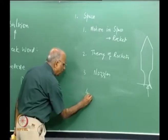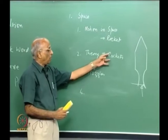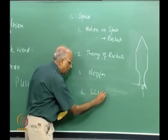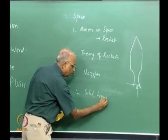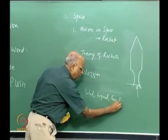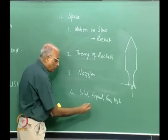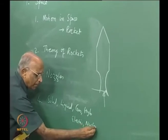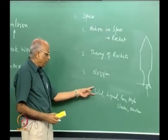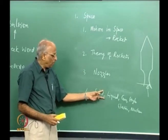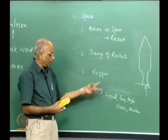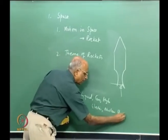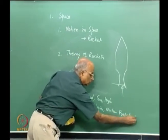The fourth chapter gets back into propellants — what is used for propelling — which could be solid, liquid, gaseous, hybrid, electric, or nuclear. We will study the characteristics required to make a good rocket propellant: solid, liquid, gas, hybrid, electric, and possibly nuclear propellants.